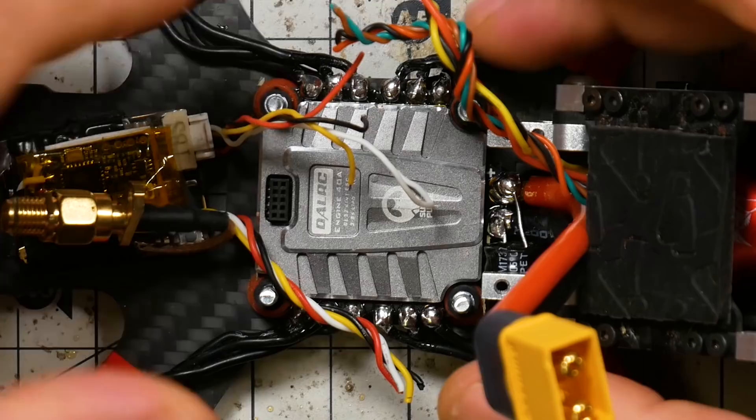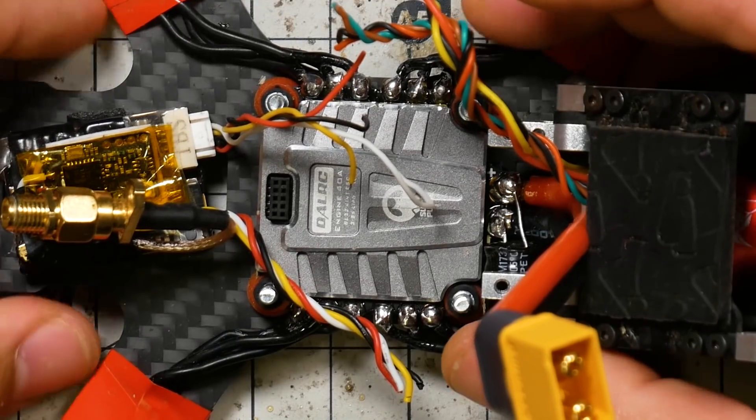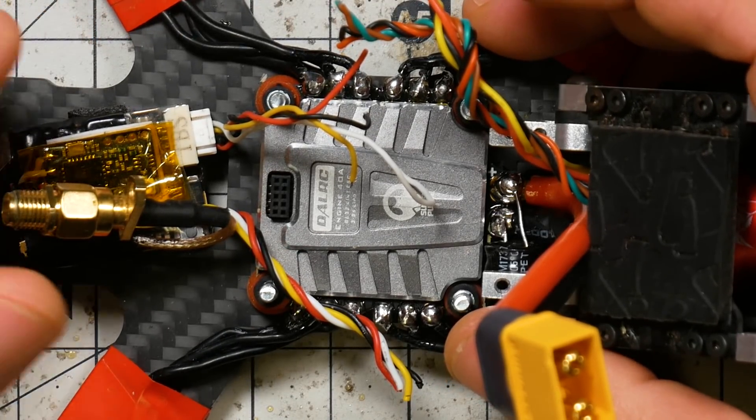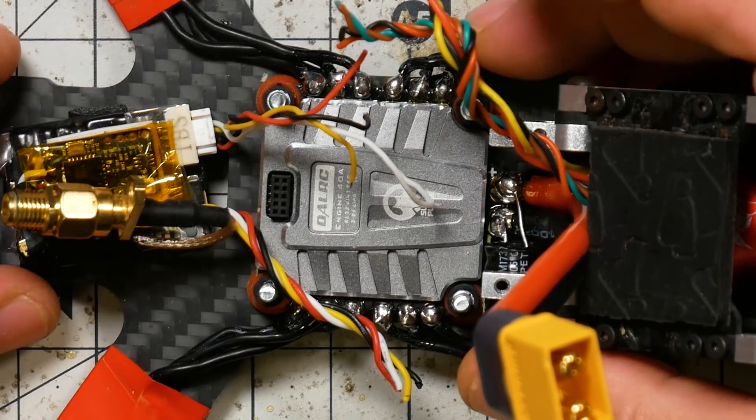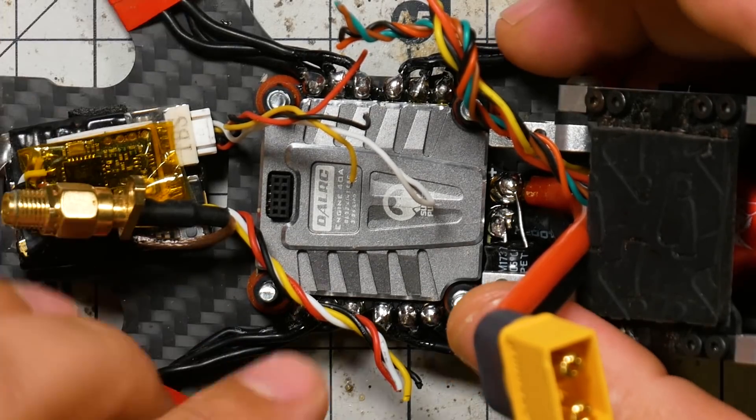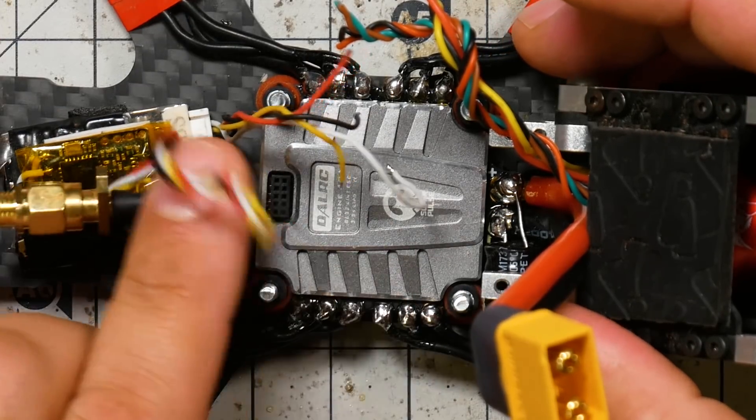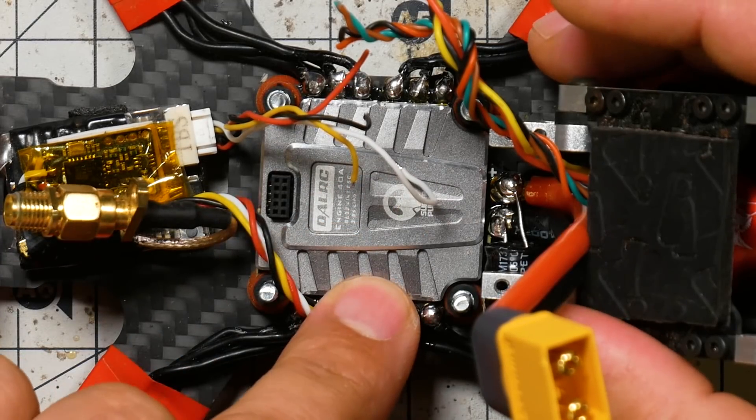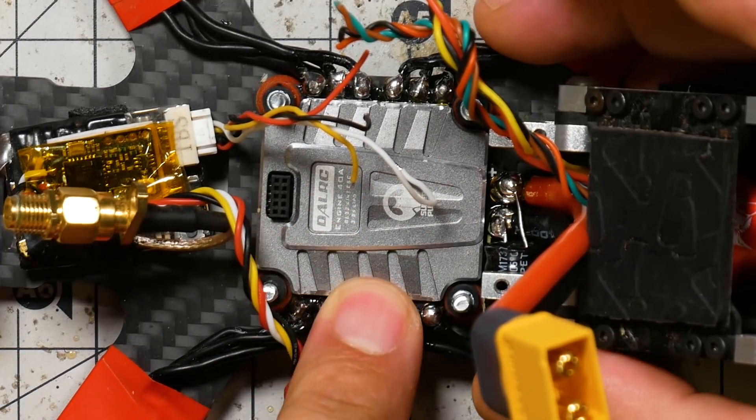If you're going to 6S, then this one doesn't support it. But it is great performance, BLHeli_32, D-Shot 1200, all the good bells and whistles, and it looks awesome to boot. I know some people who put this on top of their stack because it looks so good, they want to see it.